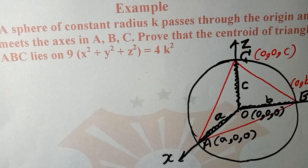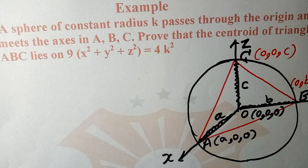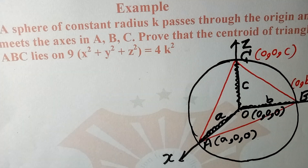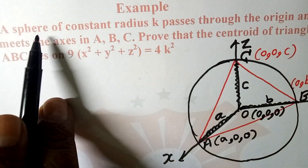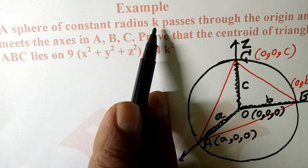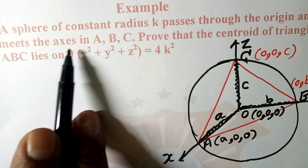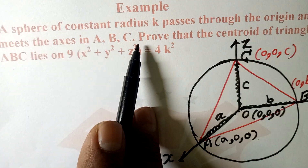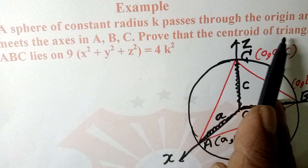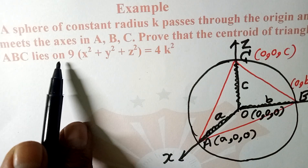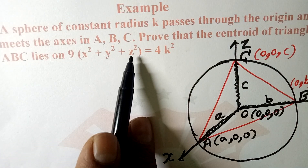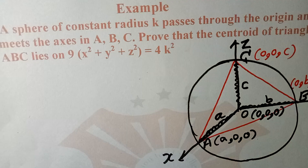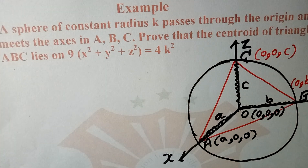It is based on the equation of a sphere. This example states: a sphere of constant radius k passes through the origin and meets the axes in A, B, and C. Prove that the centroid of triangle ABC lies on 9x² + y² + z² = 4k². This is our question.